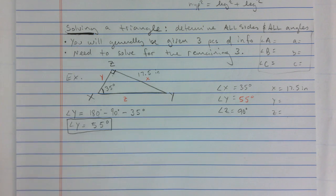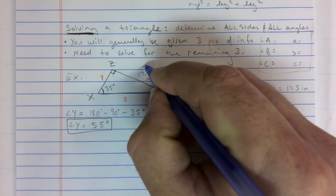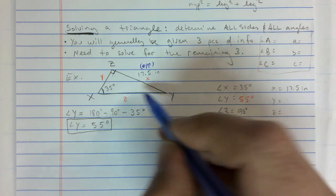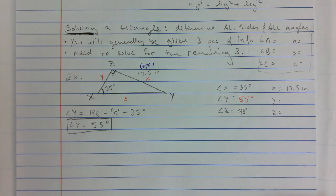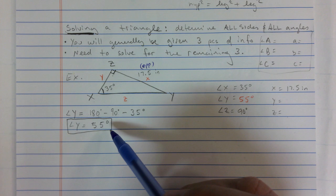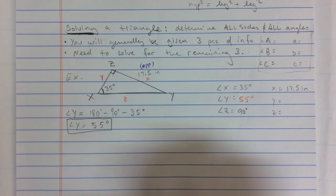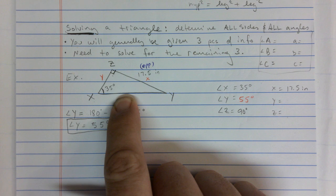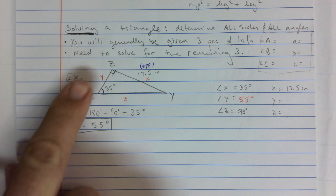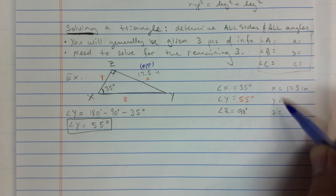Let's label our triangle based on the given angle X. Across from X, this is the opposite. This is the hypotenuse. You need to determine which side is your 'don't know, don't care' for now. You can choose to not care about Z and go with Y, or cover that one and care about Z. Either way, your final values for Y and Z will be the same.